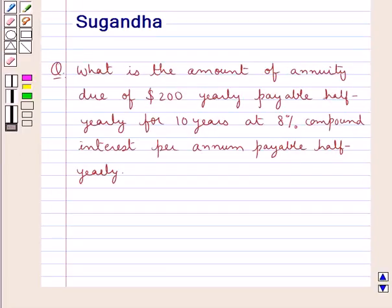Hello and welcome to the session. In this session we will discuss the following question: What is the amount of annuity due of $200 yearly payable half yearly for 10 years at 8% compound interest per annum payable half yearly?